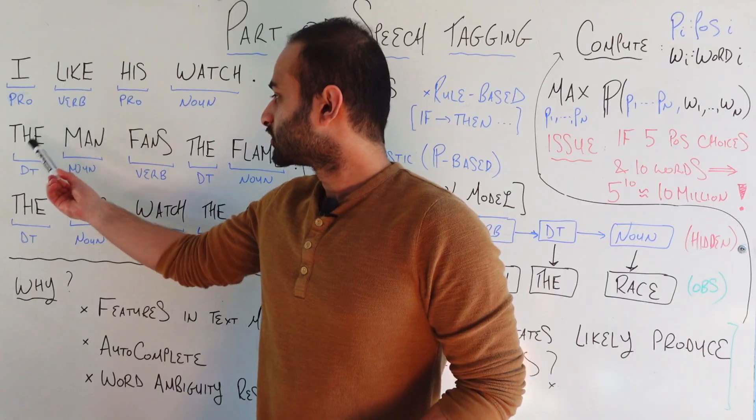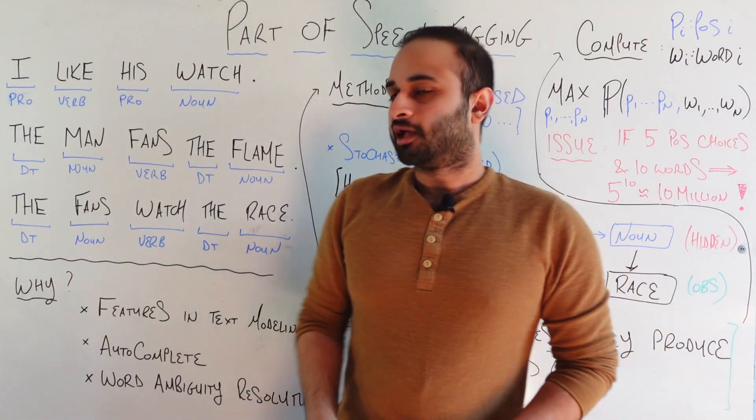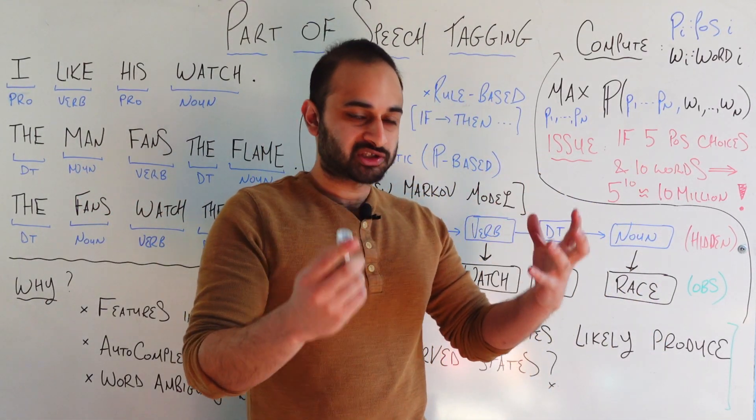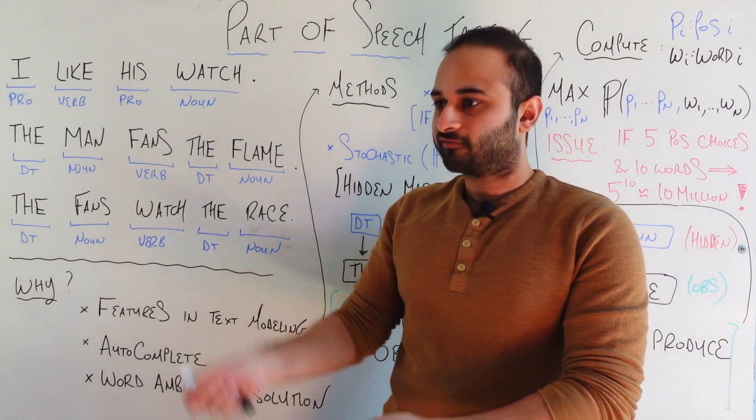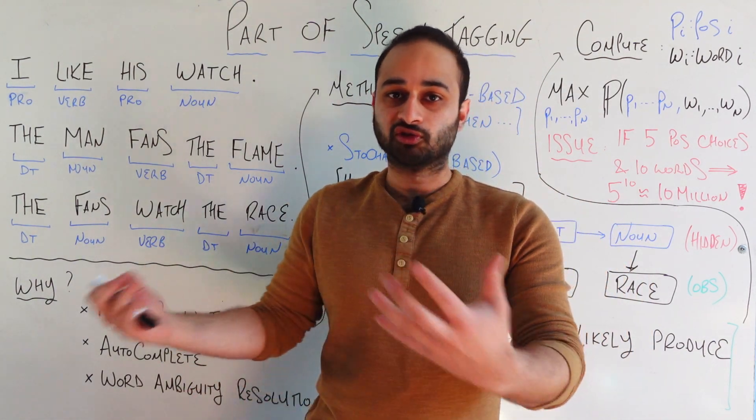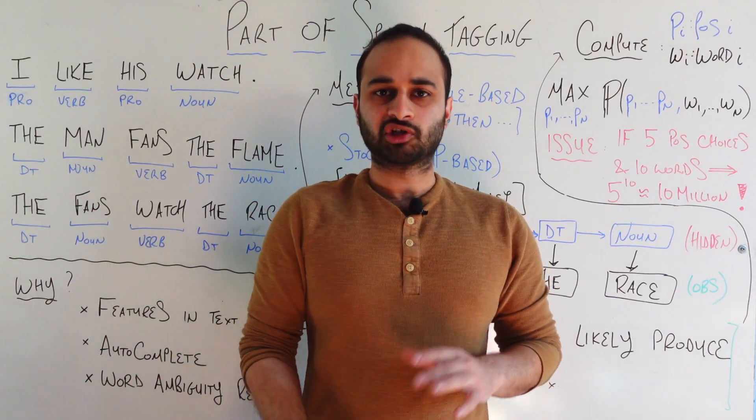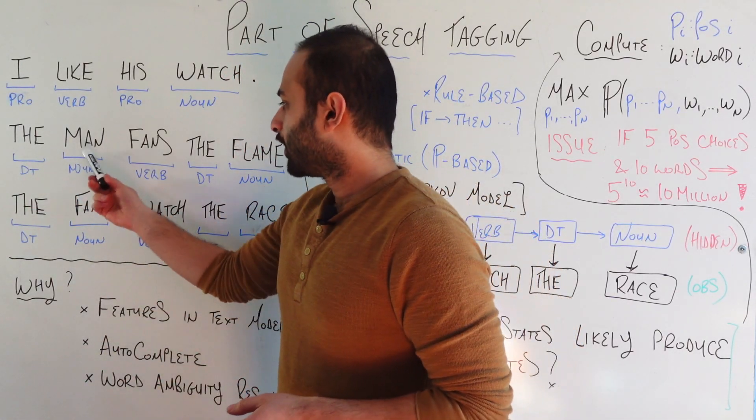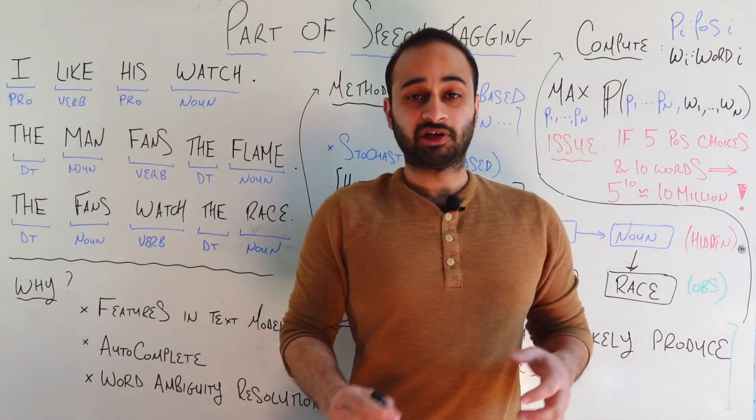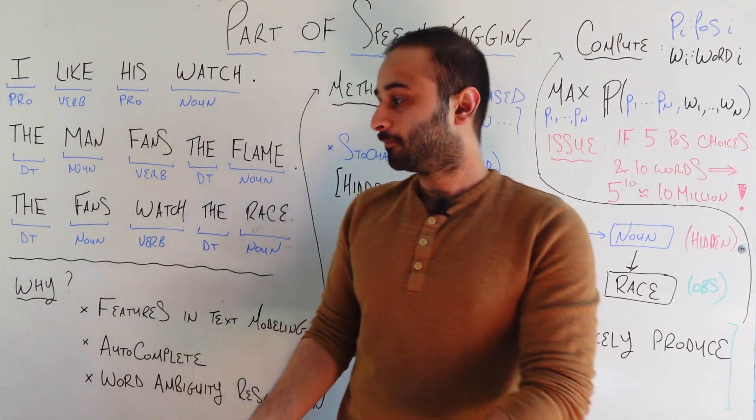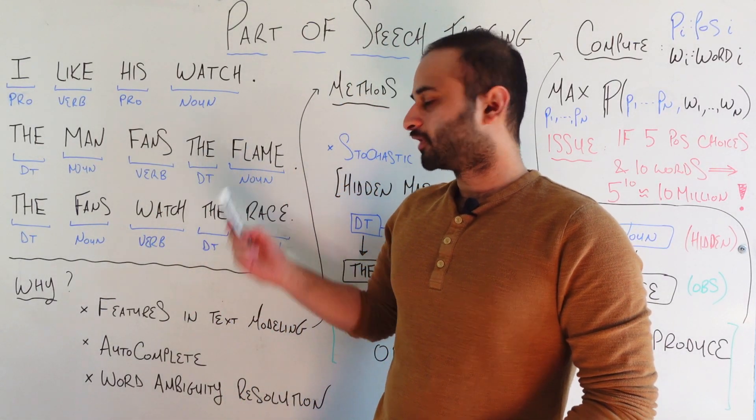But the second sentence here says, the man fans the flame. And so as we understand it, we're picturing some man, and he's like fanning a flame so the flame gets bigger or continues burning. And so we have a determiner. So the, a, these kind of words are called determiners. The man is a noun. The fans is a verb, because that's an action that he's doing to the flame. The is a determiner, and flame here is a noun.